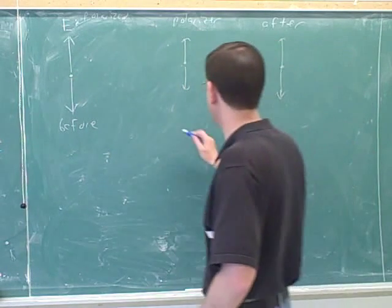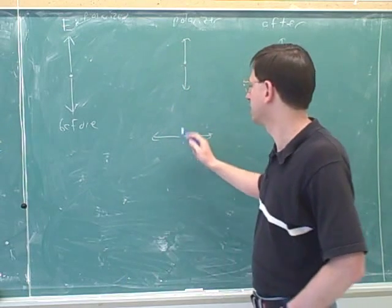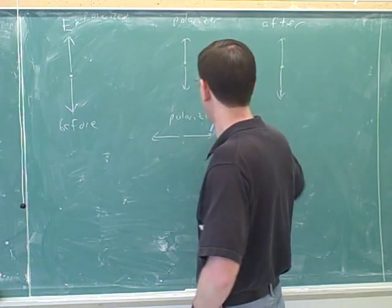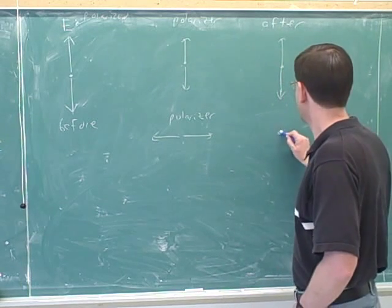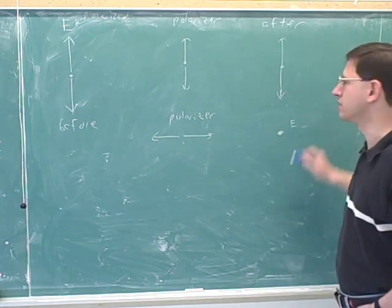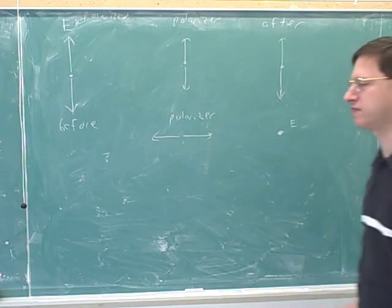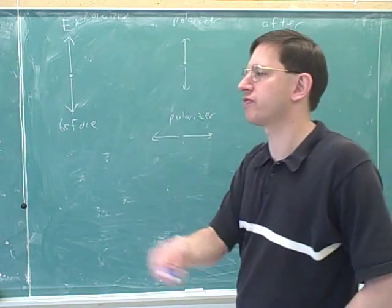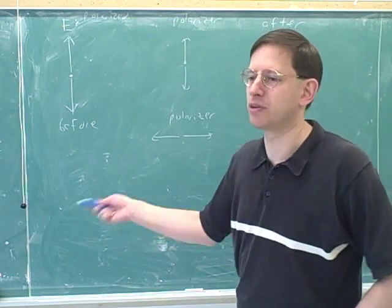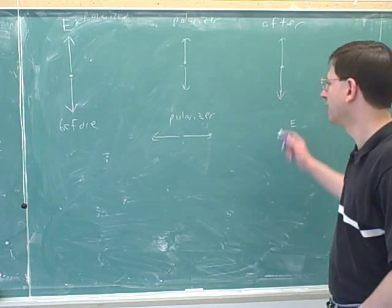Now let's do a more interesting case. If the polarizer is perpendicular to the direction of polarization, you get nothing through. You can show that with a dot — no oscillations. With the picket fence analogy: if you were only shaking your hand left to right, but the fence slats were vertical, nothing would get through because it only lets up-down through.